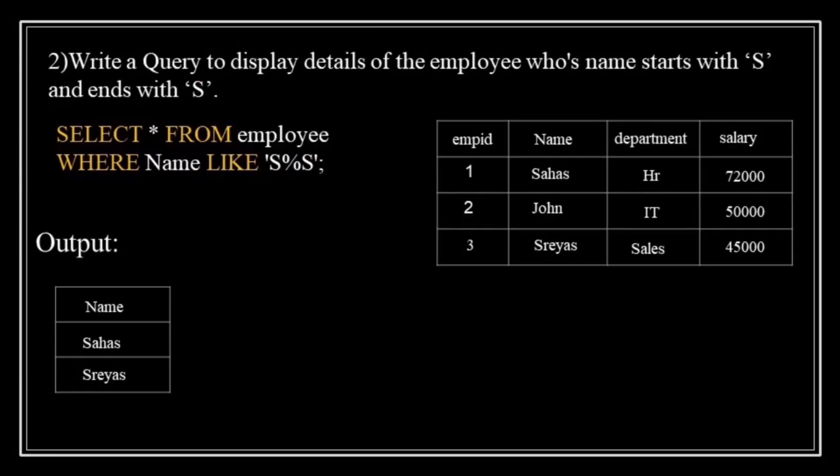The next query: display details of the employee whose name starts with 'S' and ends with 'S'. The query is: SELECT * FROM employee WHERE name LIKE 'S%S'. The LIKE operator is used for pattern matching in SQL. The percent (%) wildcard represents any sequence of characters between 'S' and 'S'. Names like 'Sahas' or 'Shayas' will be included in the result.